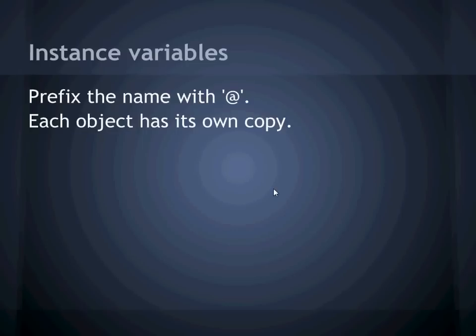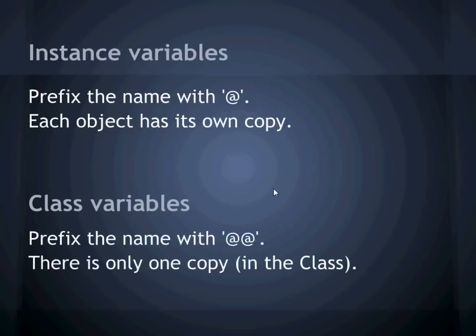There's another type of variable associated with classes called a class variable. As you can imagine, this is tied to the class, not the instance. You can tell them apart because they're prefixed with two at signs instead of one. Because they're tied to the class, there's just the one value, not one for every instance. Class variables aren't as common as instance variables.